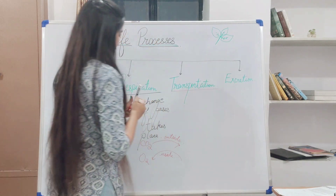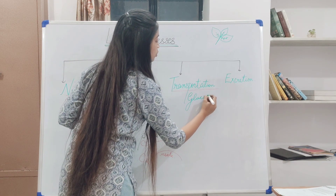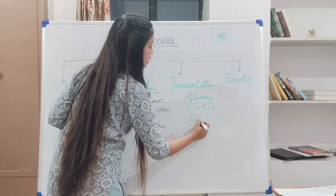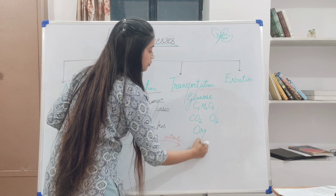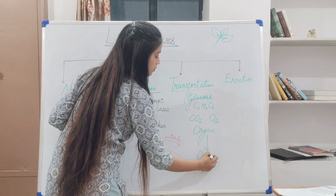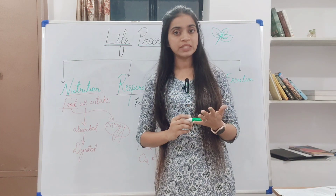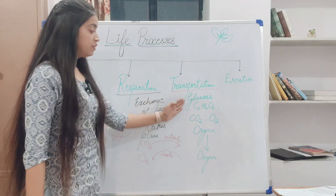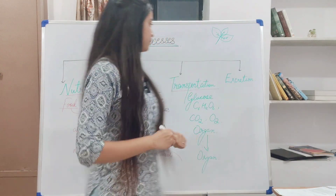Next is transportation. In transportation, glucose, carbon dioxide, and oxygen are transported from one organ to another. As we all know, our organs need carbon dioxide, oxygen, as well as glucose. So the transportation of these three is very important for an organ to function.